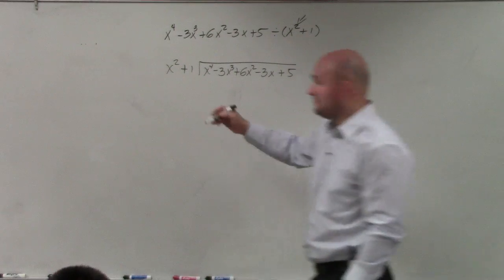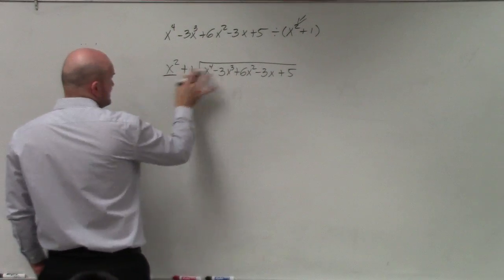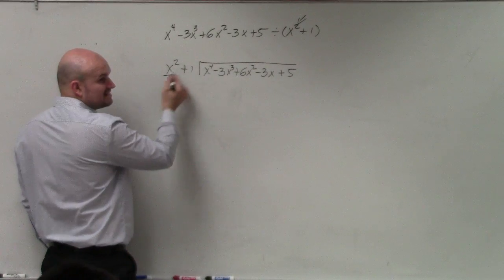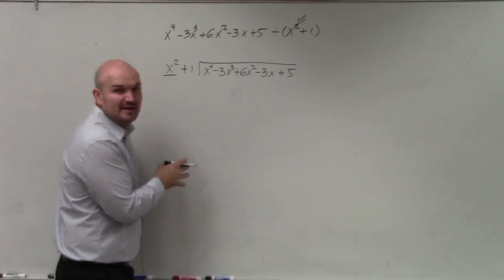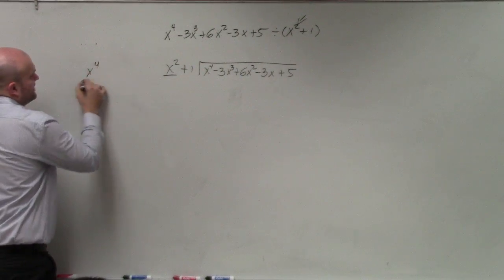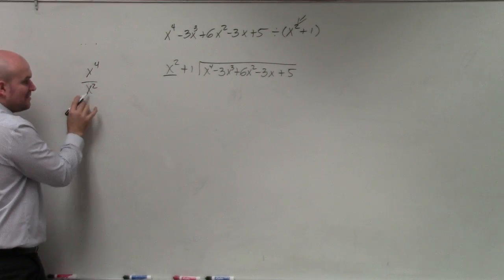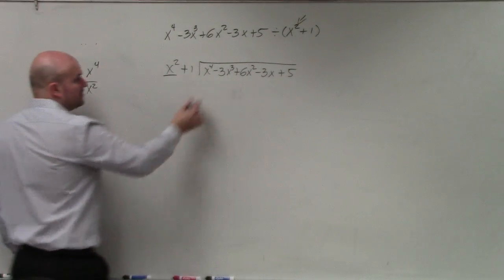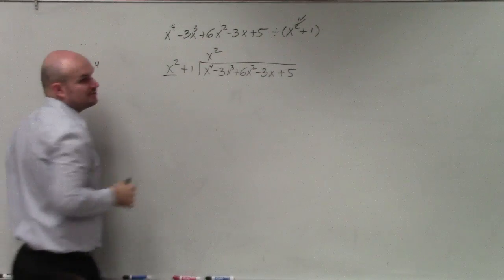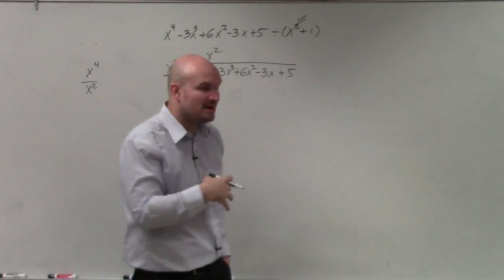So now, going through my steps, you take x squared and divide it into x to the fourth. How many times is x squared divided into x to the fourth? If that kind of tricks you up, I'm basically just asking, how many times is x squared divided into x to the fourth? Using your rules of exponents, you get x squared because you subtract the powers.